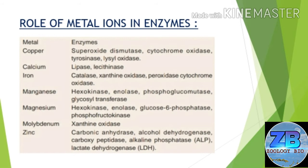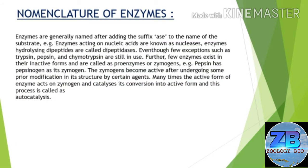Molybdenum-containing enzymes are xanthine oxidase. Zinc-containing enzymes are carbonic anhydrase, alcohol dehydrogenase, carboxypeptidase, alkaline phosphatase (ALP), and lactate dehydrogenase (LDH). Now have a look at the nomenclature of enzymes — enzymes are generally named by adding the suffix '-ase' to the name of the substrate.